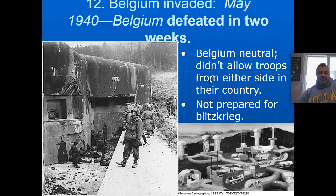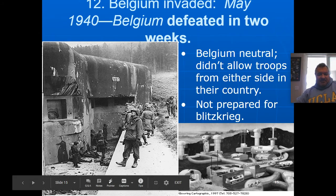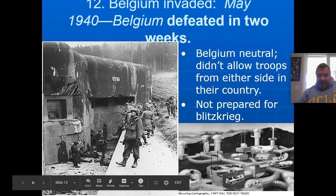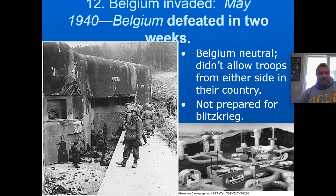Belgium was neutral and didn't allow troops from either side in their country, so they assumed the Germans wouldn't attack them. But the Germans had attacked through the Ardennes in World War I, so they should have been prepared — but they weren't. Because they were not prepared for the Blitzkrieg, they lost. The Maginot Line shows the elaborate fortresses the French built, dated 1932, which the Germans rightly wanted to go around.